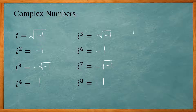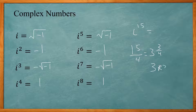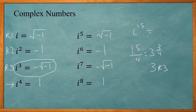If I had i to the 15th, to figure out what that is I take 15 divided by 4, since the pattern repeats every 4. That gives me 3 remainder 3. If the remainder were 1 it would be i to the first, remainder 2 means i squared, remainder 3 means i to the third. So i to the 15th equals negative square root of negative 1.